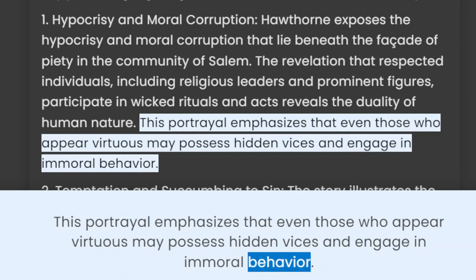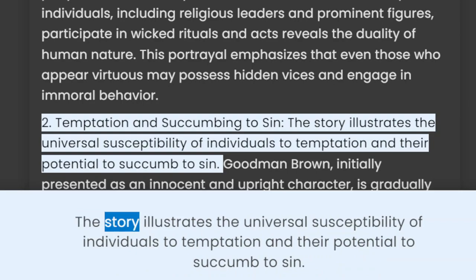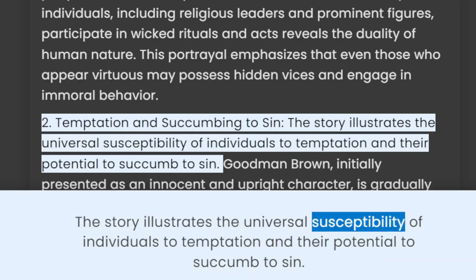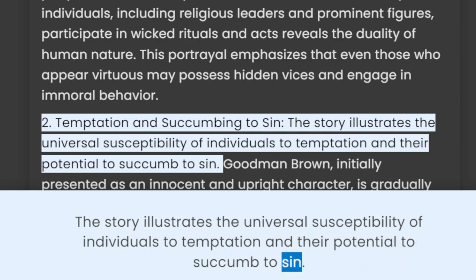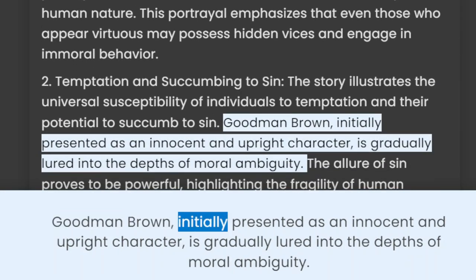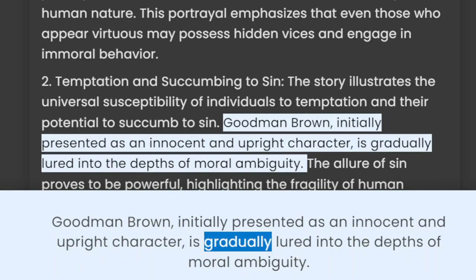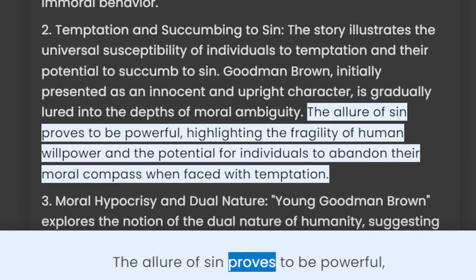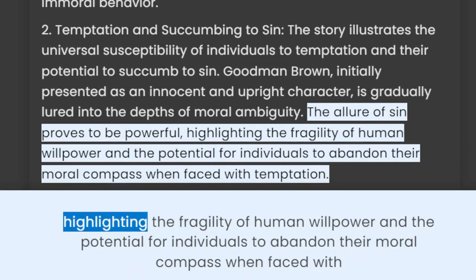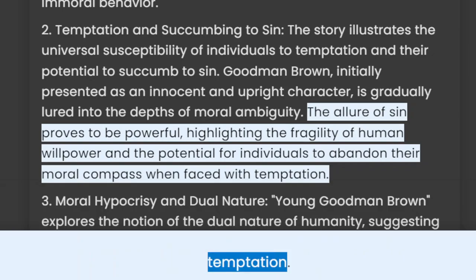2. Temptation and Succumbing to Sin. The story illustrates the universal susceptibility of individuals to temptation and their potential to succumb to sin. Goodman Brown, initially presented as an innocent and upright character, is gradually lured into the depths of moral ambiguity. The allure of sin proves to be powerful, highlighting the fragility of human willpower and the potential for individuals to abandon their moral compass when faced with temptation.